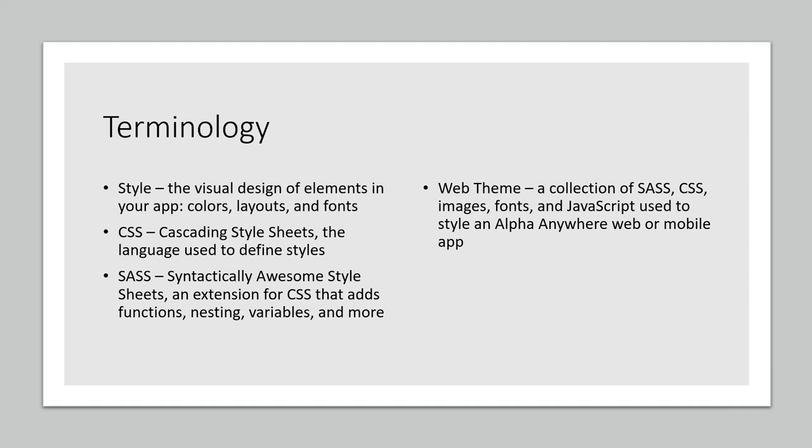This fourth term — web theme — is what we call an Alpha Anywhere style. In a traditional web page, the style is usually a CSS file defining all the classes and visuals. In Alpha Anywhere, we call it a web theme because it's more than that — it's your CSS and SASS, but also images, fonts, and JavaScript involved to map your classes to the actual elements of an application: your controls, your components, and even the general page that encases everything. There was also the term 'SAS theme,' but we now prefer 'web theme' when referring to styles used to customize your app's look.